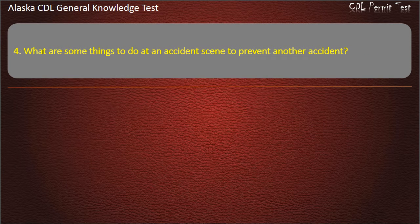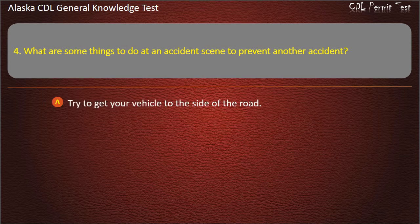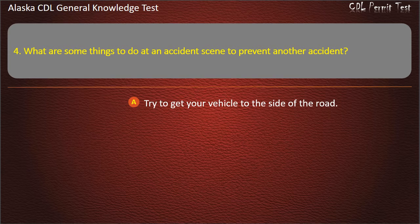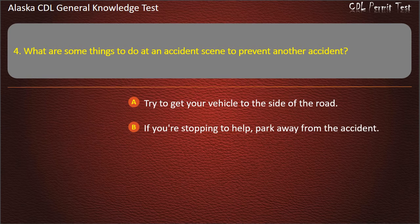Question 4. What are some things to do at an accident scene to prevent another accident? Try to get your vehicle to the side of the road. If you're stopping to help, park away from the accident.